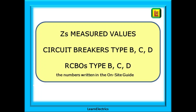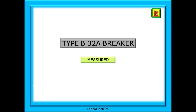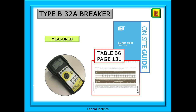This works for all BS EN 60898 breakers and BS EN 61009 RCBOs for types B, C, and D. It's almost the same calculation as before — this time it is 35 divided by IN, the size of the breaker or RCBO. ZS measured will always be smaller than the corresponding tabulated value. If it comes out the same or bigger, then the calculation has gone wrong — start again. We can return to our favourite breaker, the 32 amp type B, and calculate the maximum measured ZS using the number 35. These are measured values that will be the same as those in table B6 of the onsite guide.